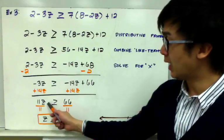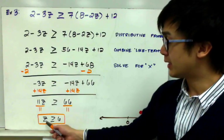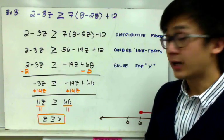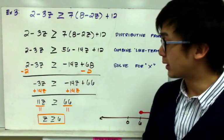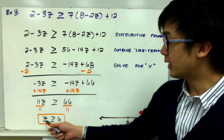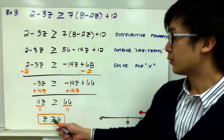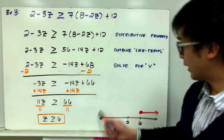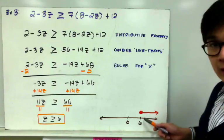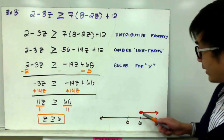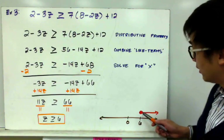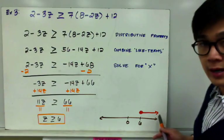We have z greater than or equal to 6. The inequality symbol does not switch because we are not dividing by a negative number. So z is still greater than or equal to 6, giving you this graph: a shaded circle at 6 going towards the right.